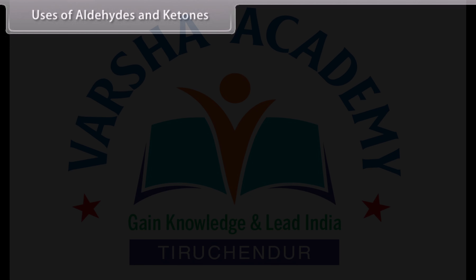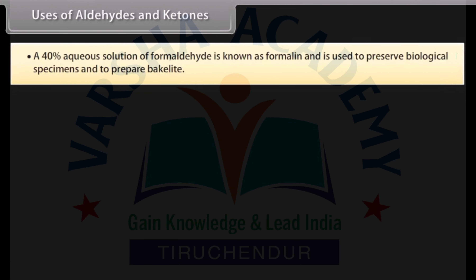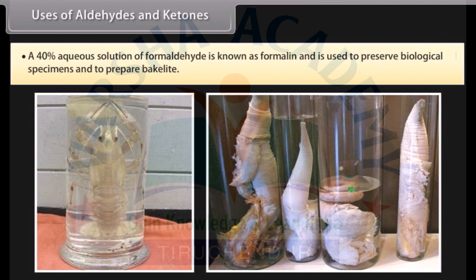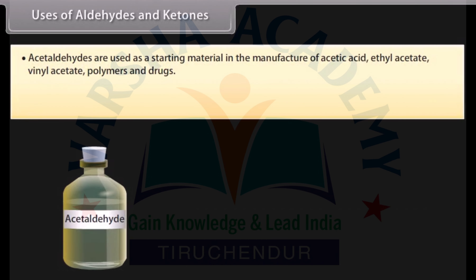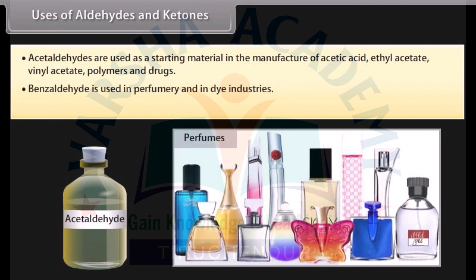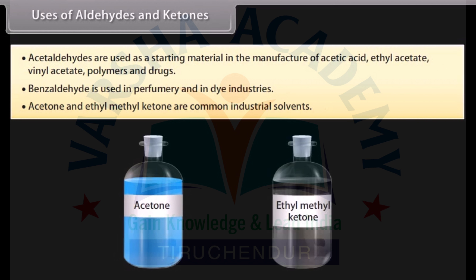Uses of aldehydes and ketones: a 40% aqueous solution of formaldehyde is known as formalin and is used to preserve biological specimens and to prepare bakelite. Acetaldehyde is used as a starting material in the manufacture of acetic acid, ethyl acetate, vinyl acetate, polymers, and drugs. Benzaldehyde is used in perfumery and in dye industries. Acetone and ethyl methyl ketone are common industrial solvents.